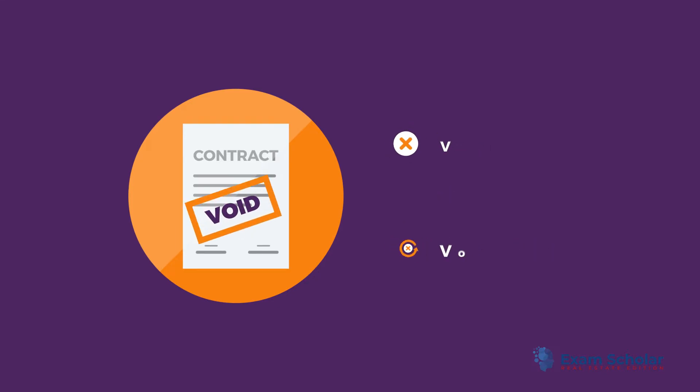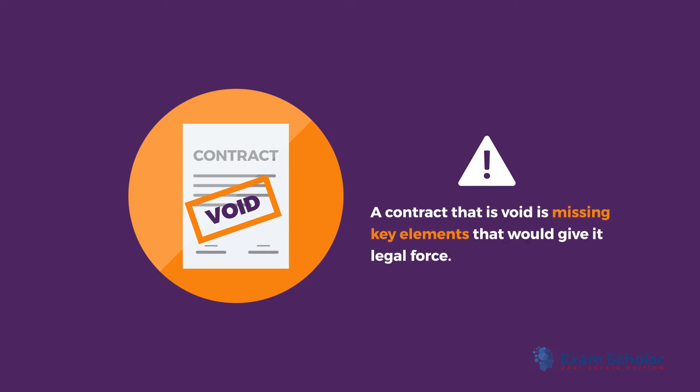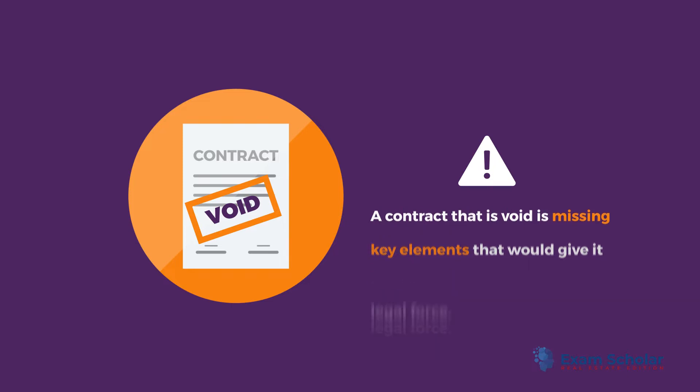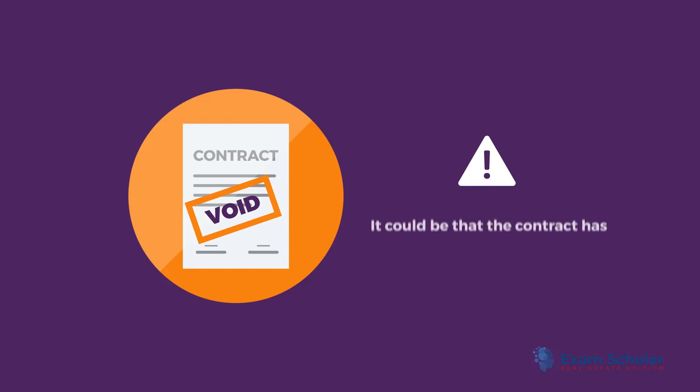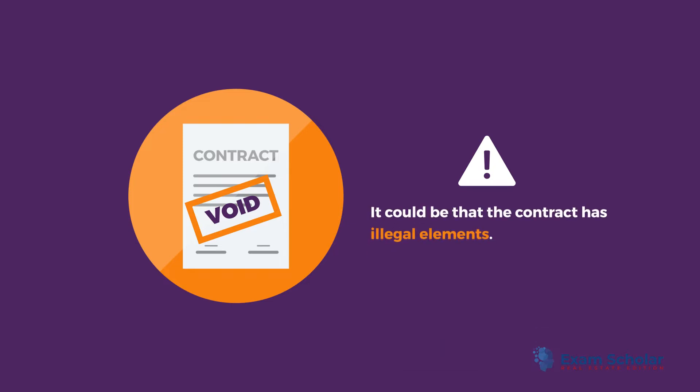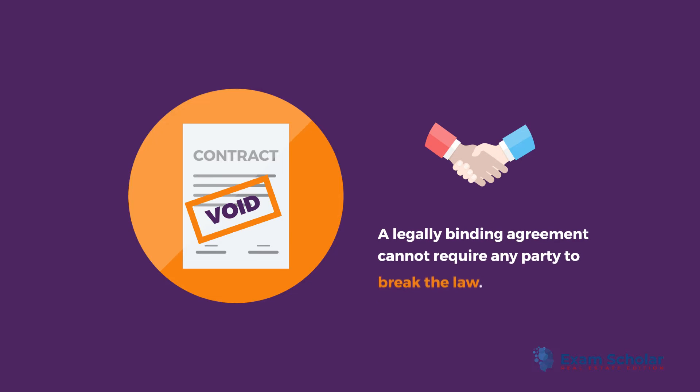A contract that is void is missing key elements that would give it legal force. Therefore, it is not actually a contract. It could be that the contract has illegal elements — a legally binding agreement cannot require any party to break the law.